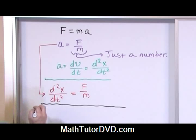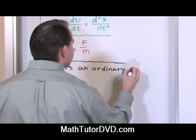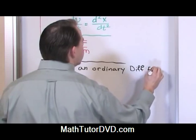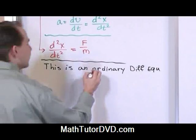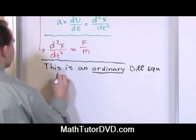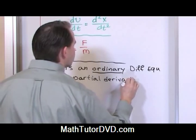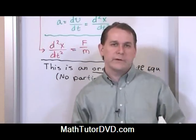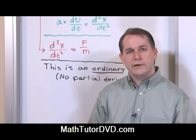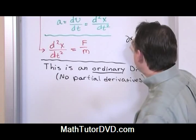This is called an ordinary differential equation — I'll abbreviate it as 'dif eq.' The reason it's called ordinary is because there are no partial derivatives. Your first course in differential equations should really be called ordinary differential equations. Ordinary simply means it's a straight derivative with respect to one variable, with no partial derivative of x with respect to time.